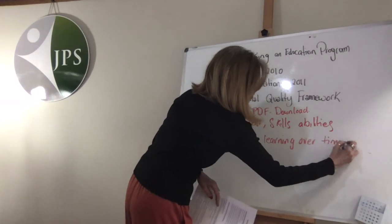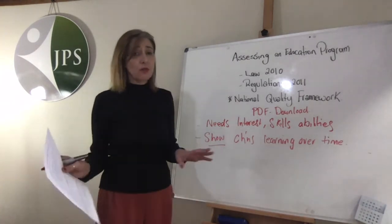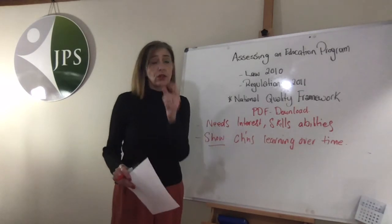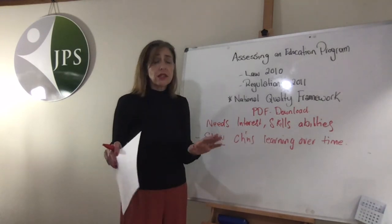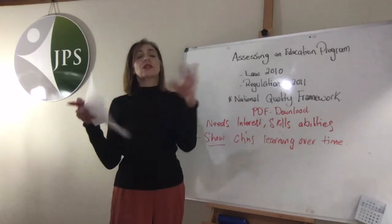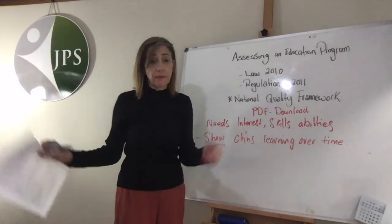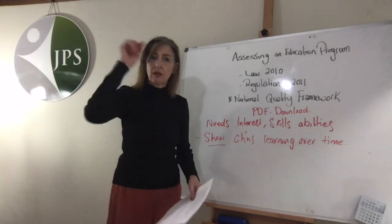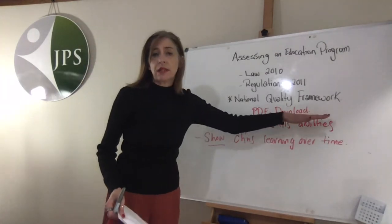What I want you to do is imagine yourself as a parent and you log into whatever app they use — like Story Park — and choose a child at random. Ask yourself those questions — not talking to the educator, because educators know the information in their head, but there's no point keeping it in your head when the regulations say you have to keep a range of documentation based on data.